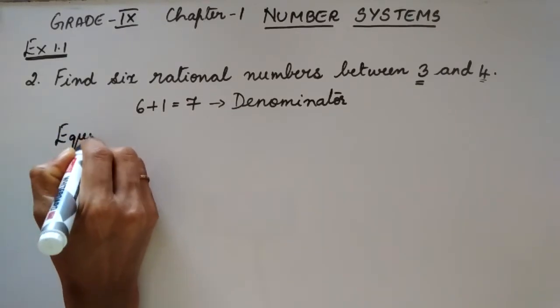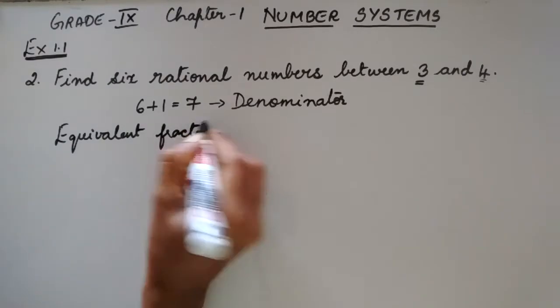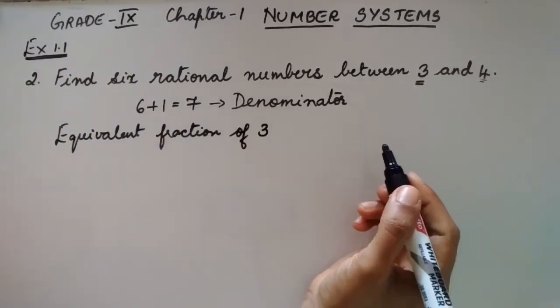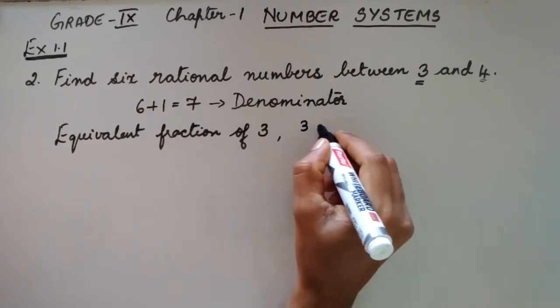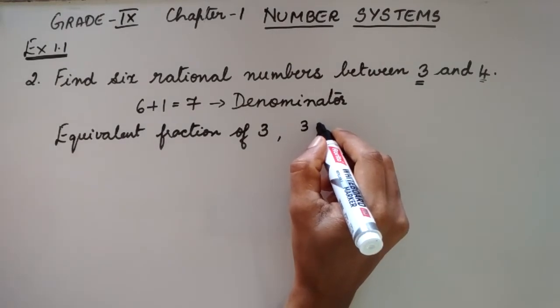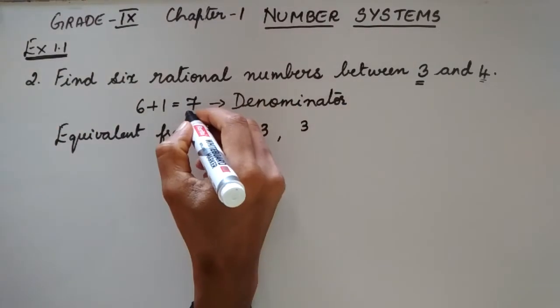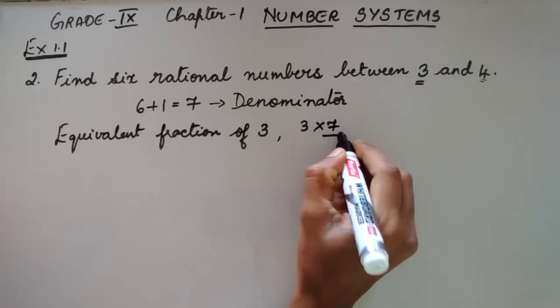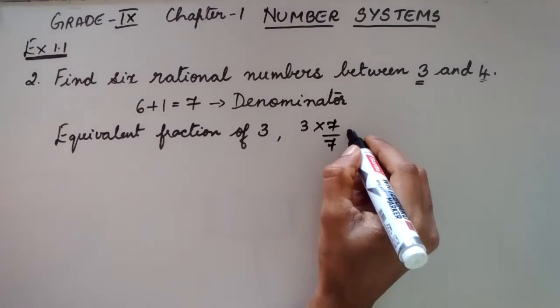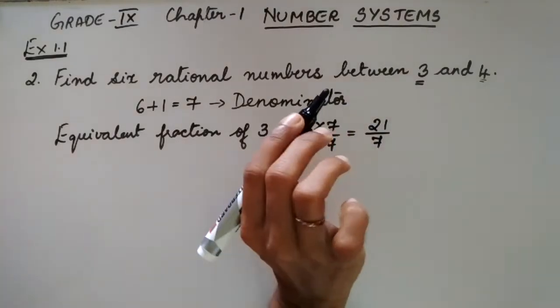The equivalent fraction of 3: you have to multiply and divide 7 with 3. How much do you get? 3 times 7 is 21 divided by 7.